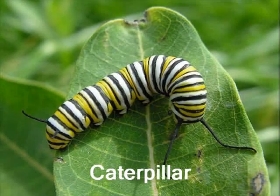After about 5 days, a tiny worm-like creature called a caterpillar hatches from the egg. This is the main growth stage of a butterfly. Caterpillars eat all day to prepare for their metamorphosis into a butterfly.